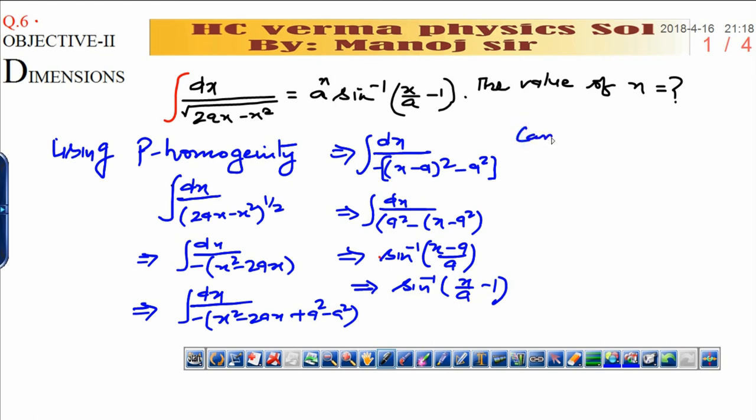Now, when you compare this result with right hand side. Let's see. You will get sin inverse of x upon a minus 1 is equal to...